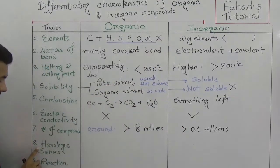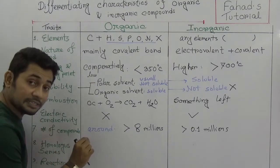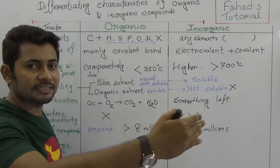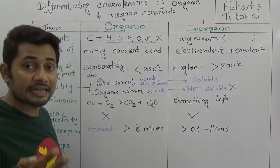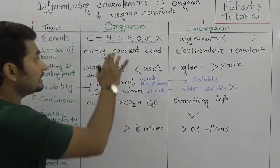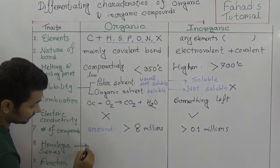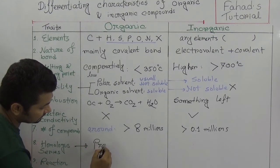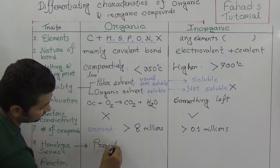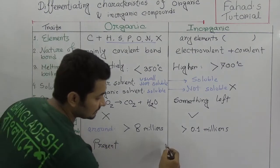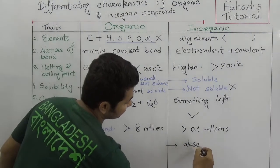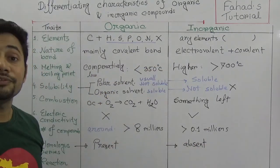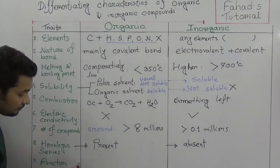Homologous series — in organic chemistry we know that alkane, alkene, aldehyde, fatty acid, ketone, and ether are examples of homologous series. So homologous series are present in organic compounds. But in inorganic compounds, homologous series are absent — there is no chance of creating any homologous series.